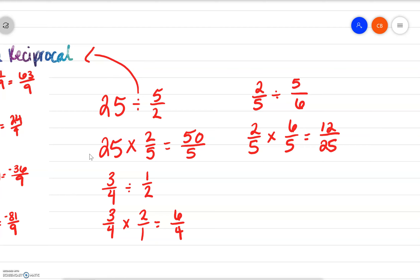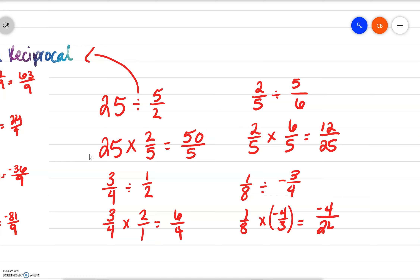Again, if we have negative signs, it doesn't matter. Let's go 1 eighth divided by negative 3 fourths. So we have 1 eighth times the reciprocal of negative 3 fourths, which would be negative 4 thirds. If we simplify, multiplying straight across, we have negative 4 over 24. A reciprocal does not affect the negativity or positivity of a number — reciprocal simply means taking the numerator and putting it in the denominator, and the denominator into the numerator.